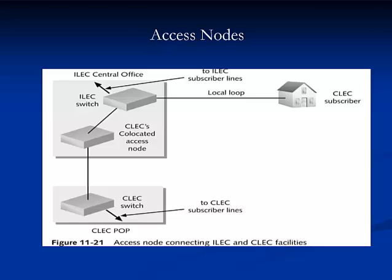An access node is the point at which a user's traffic enters or exits a carrier's network. Many types of devices qualify as access nodes. For example, in a carrier's central office, an access node may be a digital cross-connect system, or DCS, which is a switch or device that connects multiple digital lines with other digital lines, similar to an analog cross-connect but with more functions spanning higher levels of the OSI model.